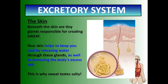There are two other structures in the excretory system not usually thought of first. One is internal and one is external. The external one is the skin. Beneath your skin are tiny glands responsible for creating sweat. Sweat is a watery, salty substance that helps keep your body cool and releases water through the glands, while also getting rid of excess salt. This is why when you exercise your sweat tastes a little salty — it's getting rid of excess salt, making it part of the excretory system.